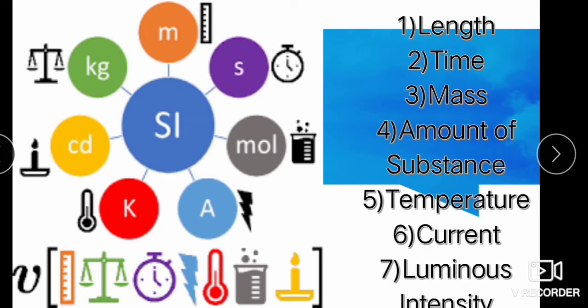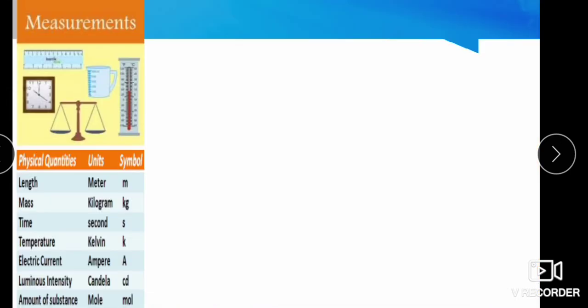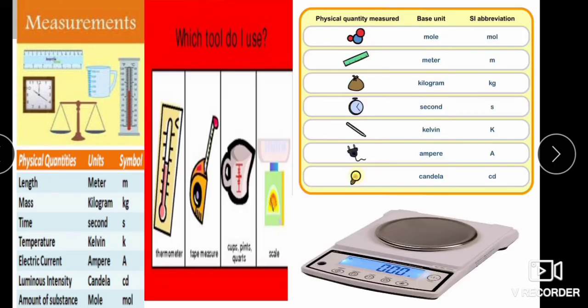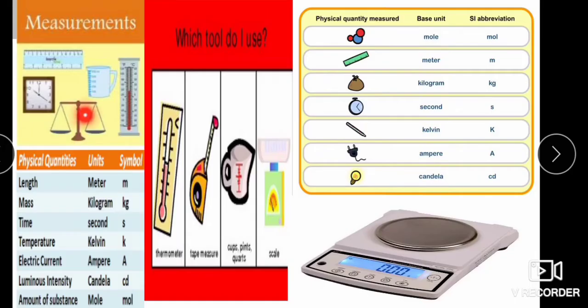Now let us study in detail. There are different instruments we use to measure physical quantities. Scale is used to measure distance, clock is used to measure time, and balance is used to measure mass. This is the balance used for measurement in shops, the balancing scale, and the old balancing scale. This is a clock to measure time and a thermometer.